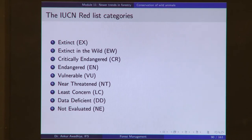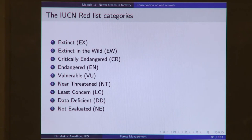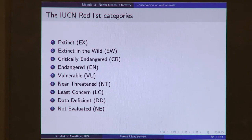With the dodo gone, certain trees that depended on it to eat their fruits and spread seeds have also disappeared — there were trees whose seeds needed to pass through the dodo's digestive system to germinate. Then we have the category of 'extinct in the wild' — animals no longer available in the wild but still present in captivity. There is a chance that captive breeding may allow release back into the wild, or breeding experiments may fail and those species will become extinct. These are species on the brink of extinction.